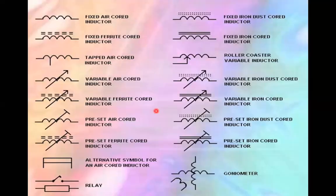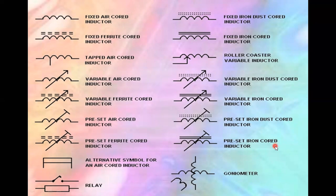These are the symbols for different types of inductors: fixed air core, fixed ferrite core, tapped air core, variable air core, variable ferrite core, fixed iron dust core with two lines, fixed iron core, and roller coaster variable inductors. These are the standard symbols used for inductors in electronic applications.